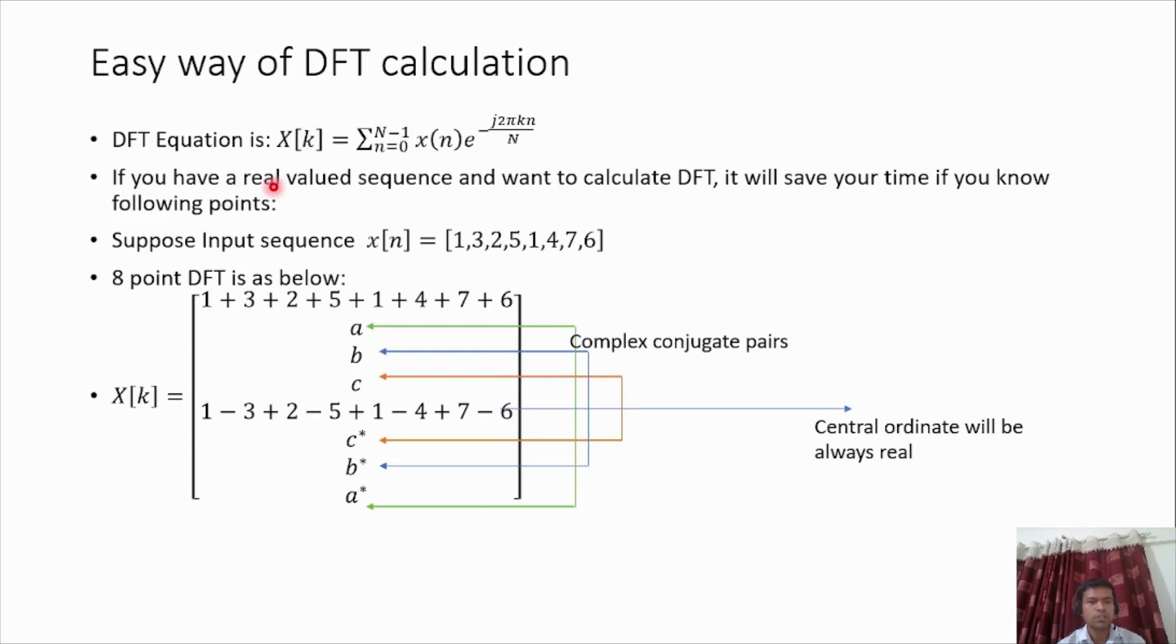This is mainly useful when we are doing manual calculations. Let's take a real-valued input sequence which is shown as x[n] = [1, 3, 2, 5, 1, 4, 7, 6], and we want to calculate the DFT of this one.